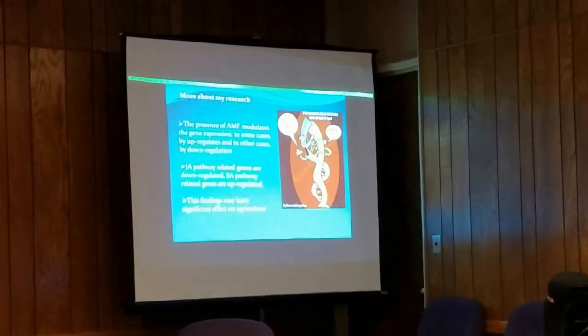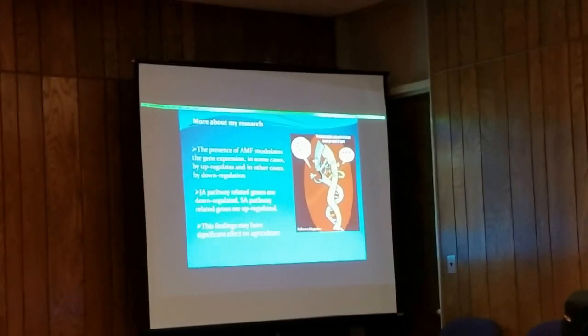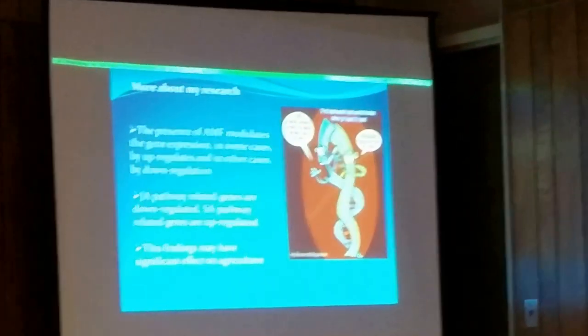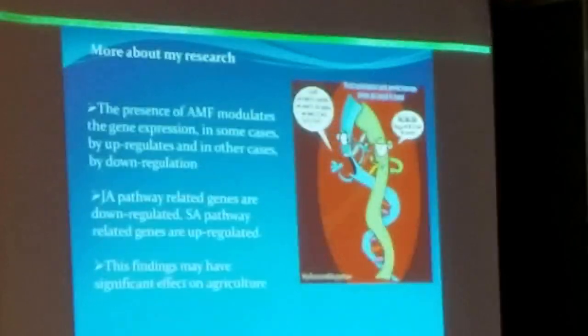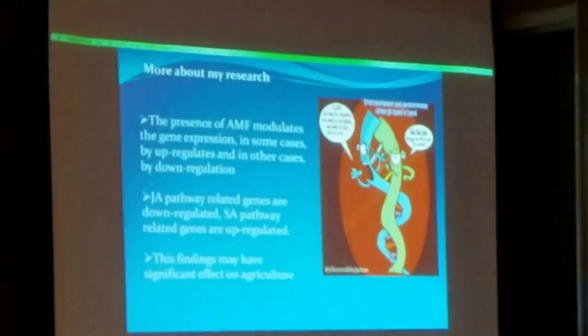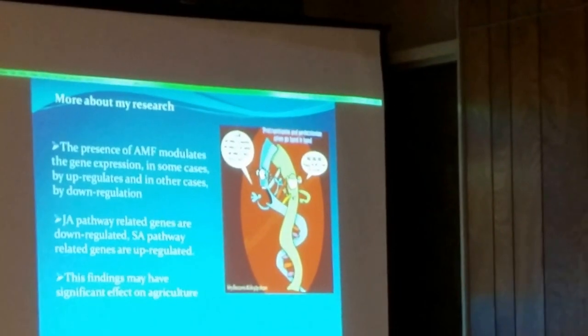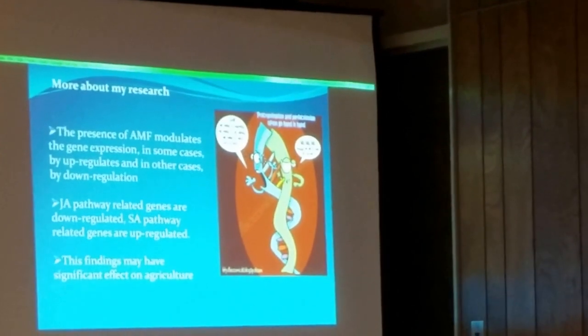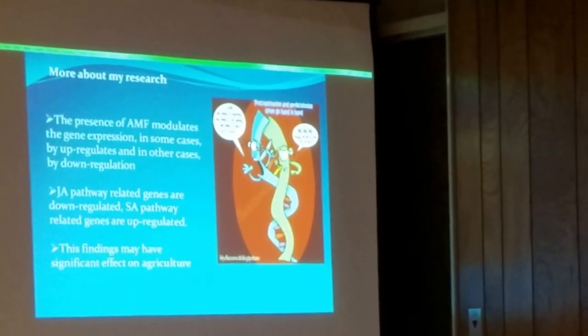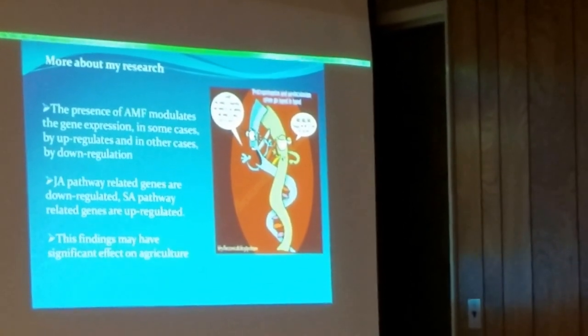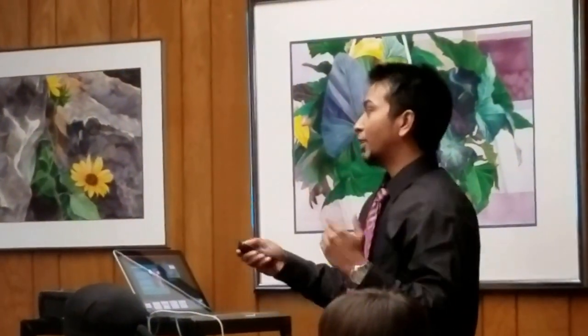So, these are some of the interesting genes I wanted to show you. What I found, to conclude: the caterpillar stimulates gene expression, and then the fungi modulates it. Most of the time, the JA pathway is up-regulated and the fungi actually down-regulates it a little bit, but the SA pathway genes are up-regulated by the fungi. This result may have some significance in agriculture.